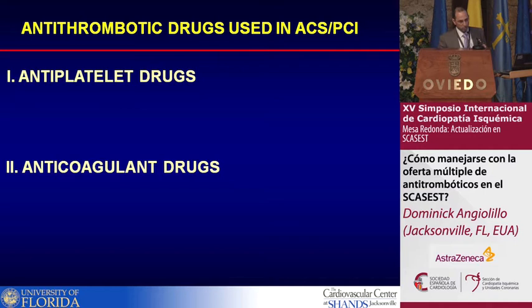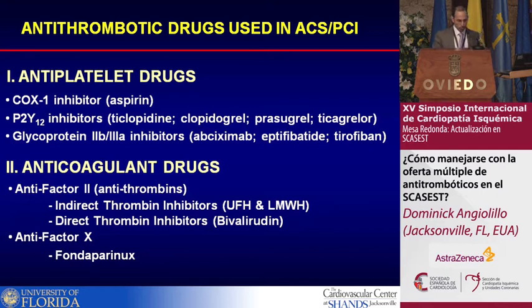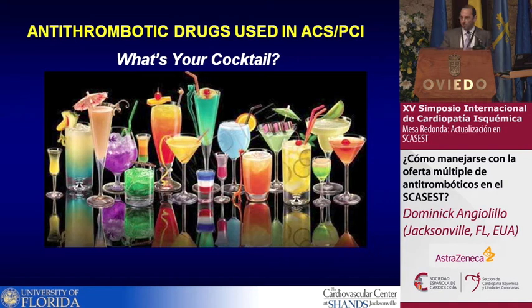To summarize the different agents approved for use in our ACS patients: we have antiplatelets, which include COX-1 inhibitors, the family of P2Y12 inhibitors, and the glycoprotein 2B3A inhibitors. The approved anticoagulants include the anti-IIa and anti-Xa agents. When you look at this, you can use different drugs in different combinations at different doses and different time points — so it's clear you can come up with at least 100 different cocktails. The question is, which is the best cocktail?